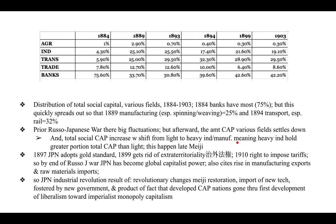In late Meiji, in 1897 Japan adopted the gold standard; in 1899 it got rid of extra-territoriality (chigai hoken); in 1910 it gained the right to impose tariffs. With all of these developments, total social capital became more spread out and there was a shift from light to heavy industry. By the end of the Russo-Japanese War, Noro says Japan had become a global capitalist power — evidenced by the rise in manufacturing exports and raw material imports. The Japanese industrial revolution was a result of revolutionary changes accompanying the Meiji Restoration, imported technology fostered by the new government, and was also a product of developed capitalist nations having already moved toward imperialist monopoly capitalism.